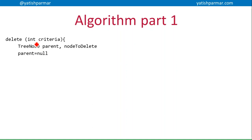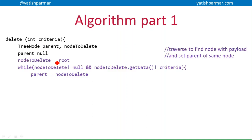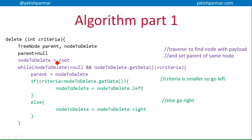Based on the videos we've done before, we were building up the binary tree. I called my node class TreeNode. One temporary node is going to be the parent, and the other is the actual node we want to get rid of. To begin with, I'm going to set parent as null. Then I need to traverse through the tree starting at the root. So node_to_delete equals root. While node_to_delete is not null and the payload is not equal to the criteria, I'm going to set parent to node_to_delete. If the criteria is smaller, I go left; otherwise, I go right.